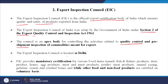It is located at Delhi. The Export Inspection Council provides mandatory certification for various food items — namely fish, fishery products, dairy, honey, egg products, meat and meat products, poultry meat products, animal casing, gelatin, and crushed bones — while other food and non-food products are certified on a voluntary basis. So for some food-related items it is compulsory and for others it may be on a voluntary basis.